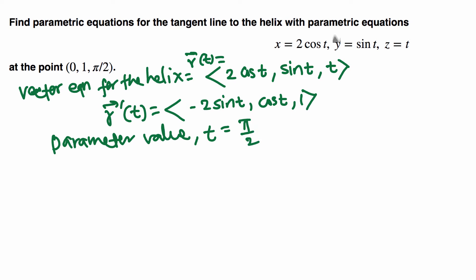You could have solved it this way: sine t equals 1, that means t is π/2. Same thing. Now let's plug this in here. So r'(π/2): sine π/2 is 1, so -2, cosine π/2 is 0, 1. So this is derivative of the curve at π/2.